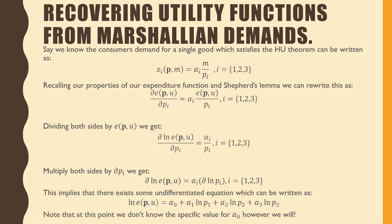Recalling our properties of our expenditure function and Shepard's Lemma, we can rewrite this as the partial derivative of our expenditure function with respect to the price of good i is equal to α_i times our expenditure function over p_i, considering the same three goods. So Shepard's Lemma, remember, is just the partial derivative of our expenditure function with respect to the price of good i. That's the same thing as our Marshallian demand, which is also equivalent to our Hicksian demand.